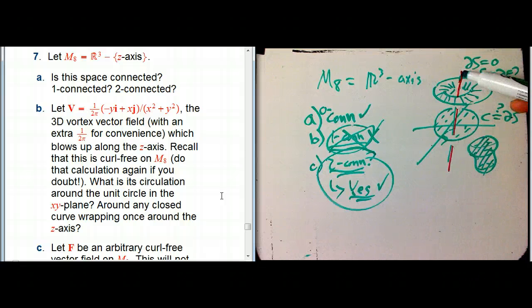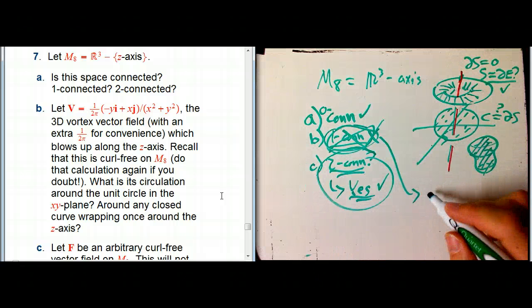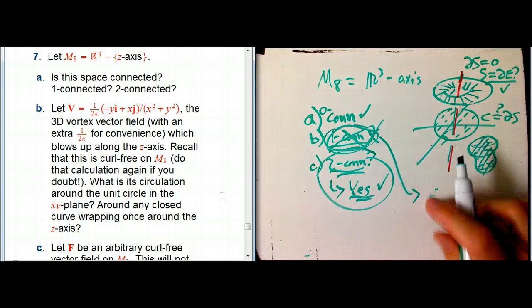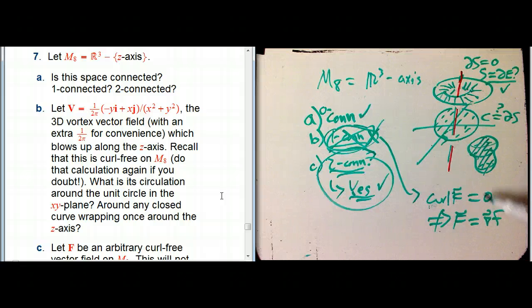So now, because it's not one connected, not simply connected anymore, then we're going to have the situation where just because a vector field is curl-free does not imply it's conservative. And so what we want to do is we want to say, well, how much more do we need besides a conservative vector field to create a curl-free vector field? Well, this is exactly like in one dimension. Take a look at B there.